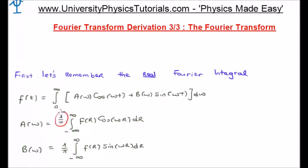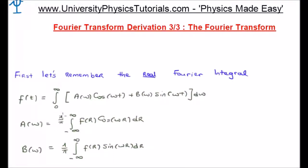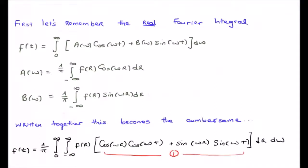The constant term 1 over pi out in front is a legacy issue from Fourier series, because calculating the a sub n's and b sub n's involved having a 1 over L, where L was half the period, in front of the integrals. As we extended the concept of Fourier series to aperiodic functions we retained some form of this term out in front, which resulted in the 1 over pi. If we insert the functional forms of a of omega and b of omega into f of t we will get the particular expression shown.